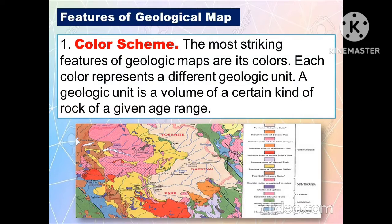The following are the features of geological maps. The first one is the color scheme. The most striking feature of geologic maps is its color. Each color represents a different geologic unit. A geologic unit is a volume of a certain kind of rock of a given age range.